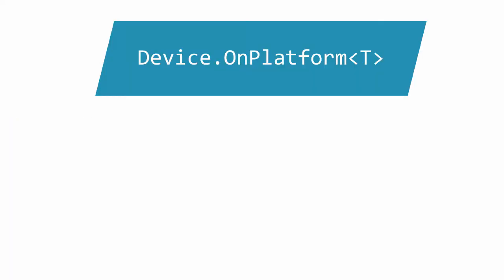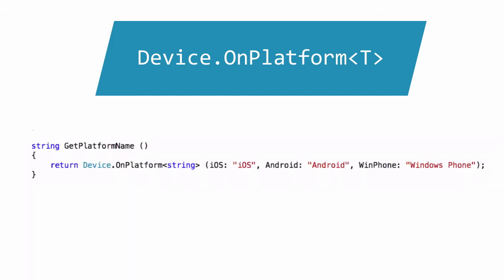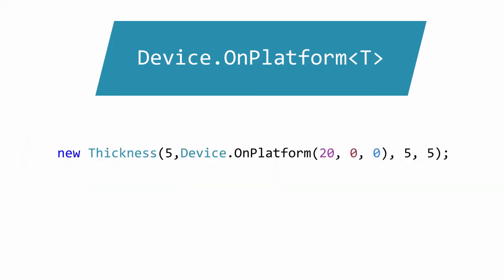The second variation is a generic Device.onPlatform<T>, which takes three T parameters and returns a T. The three parameters correspond to iOS, Android, and Windows Phone. There is no default parameter case here — you must supply all three values. This method is useful if you want to change a parameter or property based on the platform you happen to be running on.